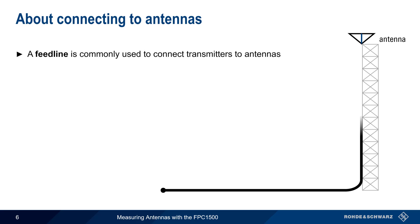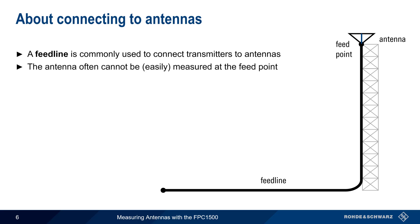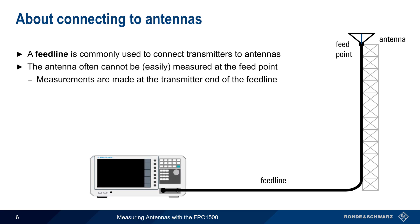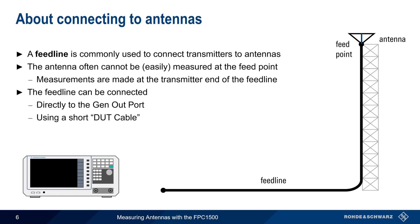In most cases, a feed line is used to connect a transmitter to an antenna, or more precisely to the antenna feed point. Because antennas generally work best when mounted in high or unobstructed locations such as on a tower, the feed point may be very difficult to access, and therefore antenna measurements are often made at the transmitter end of the feed line. There are two methods for connecting a feed line to the FPC-1500: simply connecting the feed line directly to the Gen-Out port, or using a short, high-quality DUT (device under test) cable. This is often done for ease of attachment or to avoid strain on the instrument connector. Measurement accuracy is unaffected by this DUT cable as long as calibration takes this cable into account.